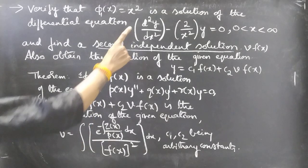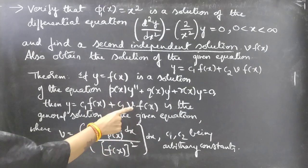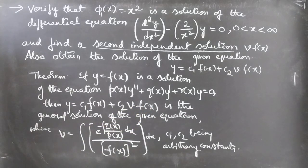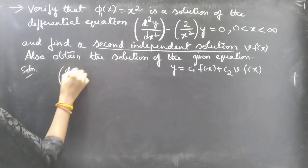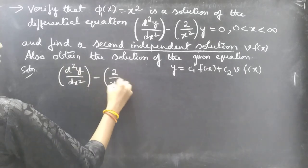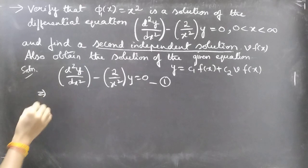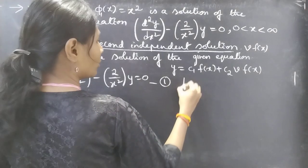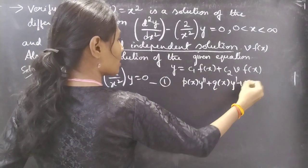We need to write the given differential equation in the standard form p(x)y'' + q(x)y' + r(x)y = 0, then find v. After finding v, we find v·f(x), which is the second independent solution, and then write the general solution.